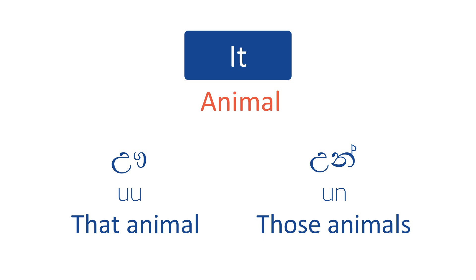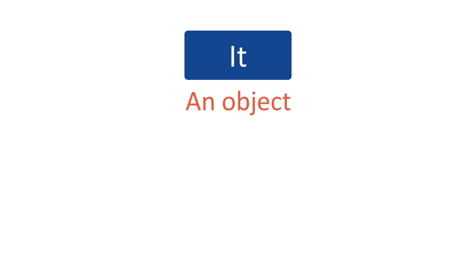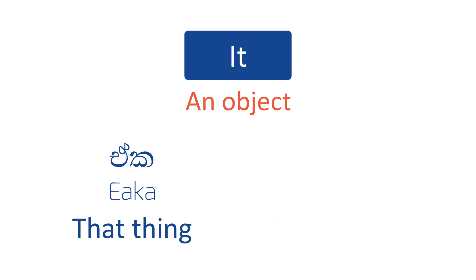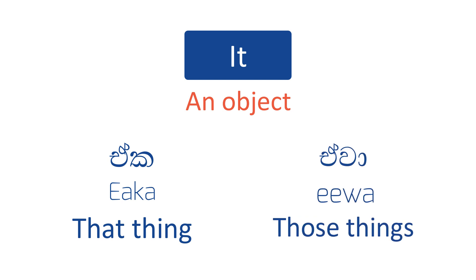There are some people who call animals as ea as well, which means he or she. If you want to talk about an object, the word is eaka. Eaka literally means that thing. The plural word is eawa, meaning those things.